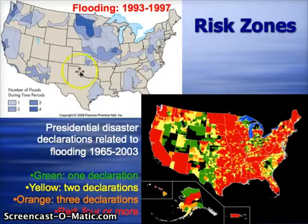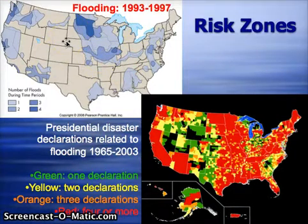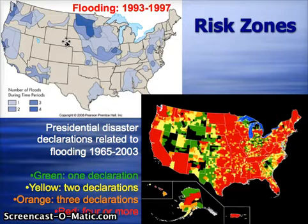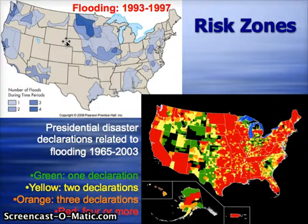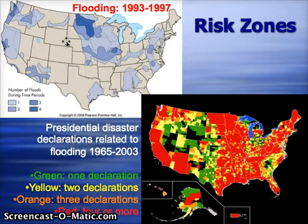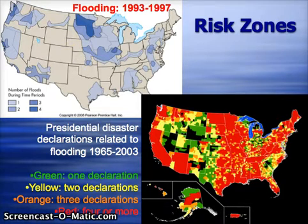What places are at risk? Two maps from the book are shown here, and the most interesting one shows how many presidential disaster declarations related to flooding occurred over the course of about 40 years. Almost every county in the United States had at least one presidential disaster declaration related to flooding. This is a very common hazard found in most parts of the United States.